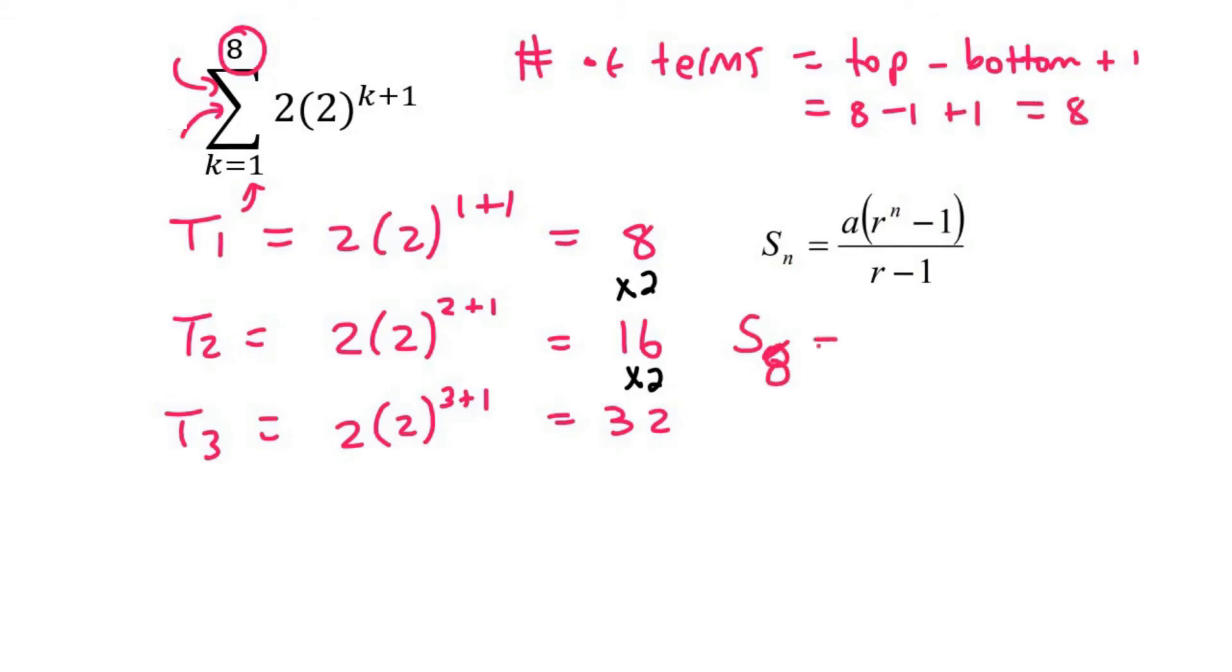So to find the sum of n terms we go a. a is always your term 1 which is 8. The ratio we are multiplying by 2. Then to the power of 8 and then over 2 minus 1. And that gives us 2,040.